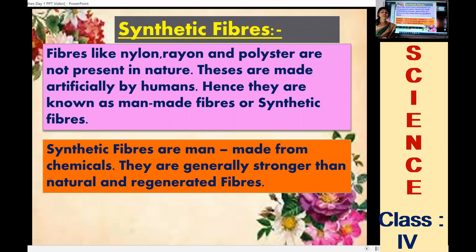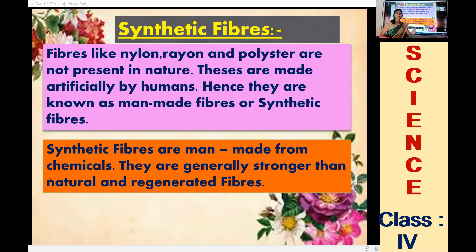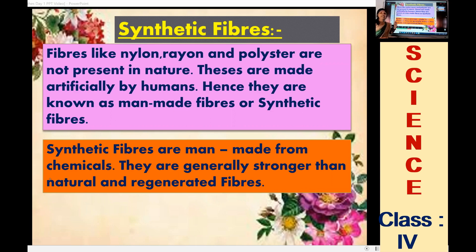Now we are going to discuss about synthetic fiber. Synthetic fibers we can call man-made fiber or artificial fiber. Examples of synthetic fibers include nylon, rayon, and polyester. These are made by human beings artificially, so they are called man-made fibers. Synthetic fibers are made from different types of chemicals, and these fibers are stronger than natural fibers.